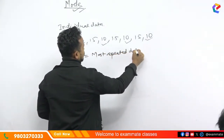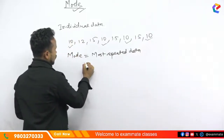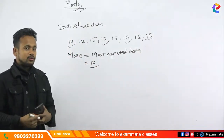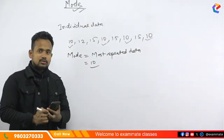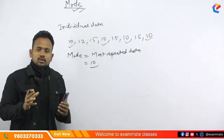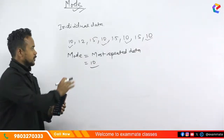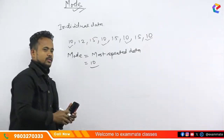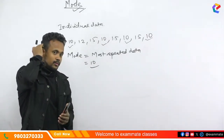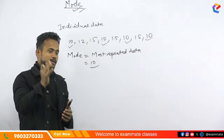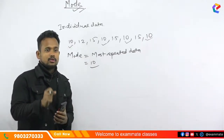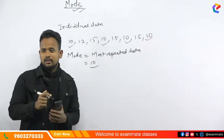What is it? 3. So I'm going to answer your question. This is individual data. What are all the repeated data? Mode. Most repeated data is mode in individual. Do you understand?